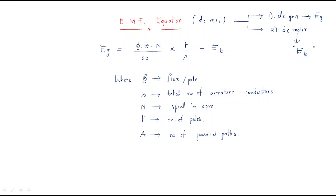The formula is EG or EB, where EG is the generated EMF for the generator and EB is the back EMF for the motor. The formula is: EG (or EB) = Φ × Z × N / 60 × P / A. Here Φ is the flux per pole, and Z is the total number of armature conductors.